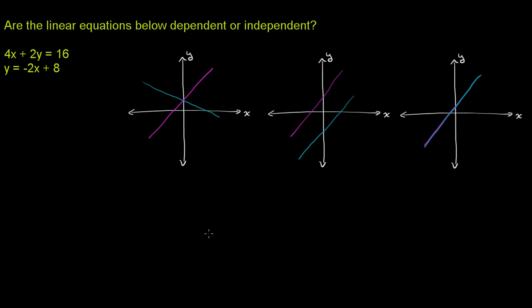When we think about lines representing the solution set of equations, the first two cases — where we have two separate lines that are not the same line — we call these two separate equations as being independent.